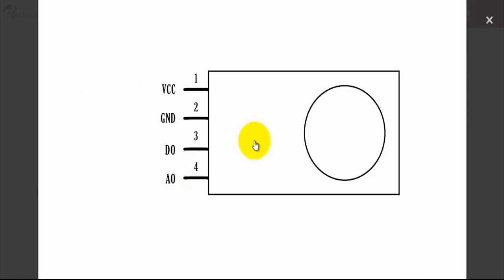Moving on to the operation. The module uses an MQ6 sensor to sense LPG leak. The MQ6 can detect gas concentrations anywhere from 200 to 1000 parts per million.